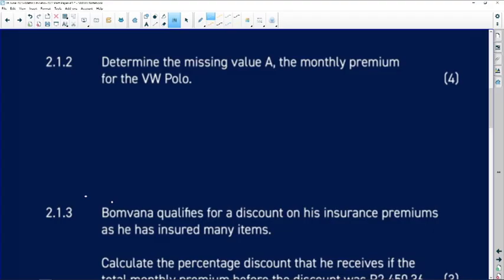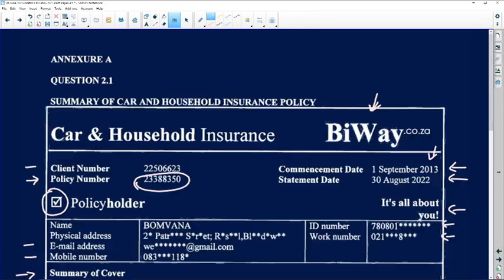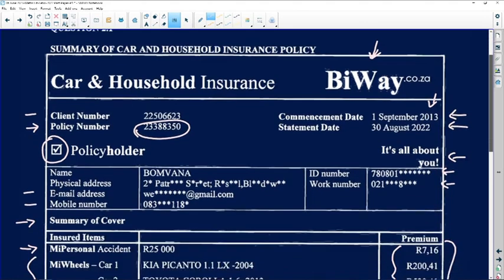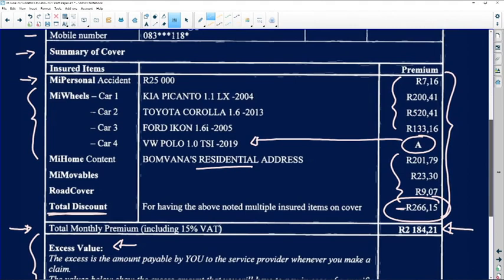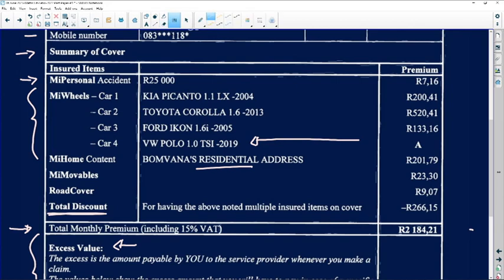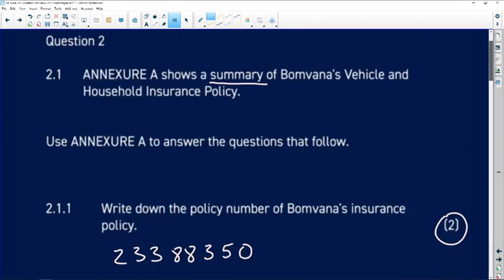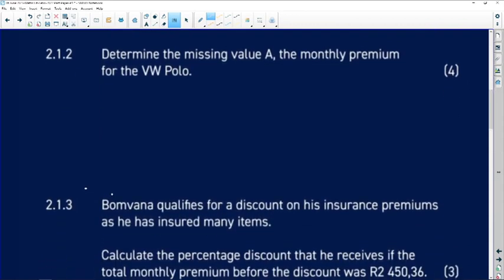Question 2.1.2: Determine the missing value A, the monthly premium for the VW Polo. Let's go back to our premiums. I need to add all these values, subtract this value, and it should give me that value. Then I'll get the value for A, solving for A.